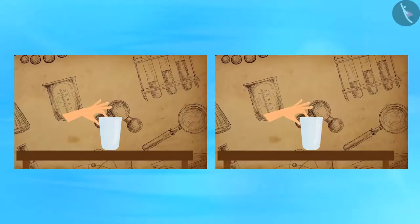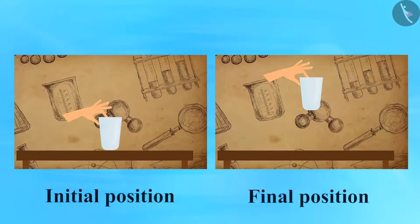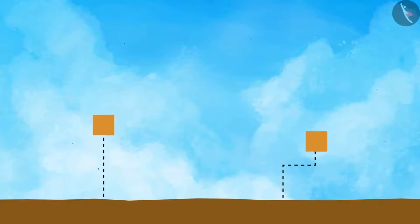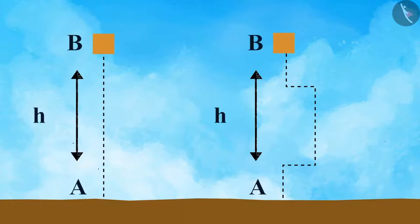When an object is raised to a certain height, the work done depends on the difference between the vertical heights of the initial and final positions of the object, and not on the path taken. Looking at two objects taking two separate paths to reach from position A to position B where AB equals h — in both cases the work done on both objects is mgh.